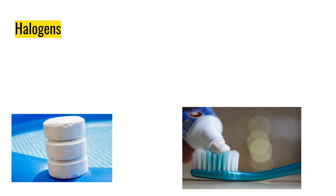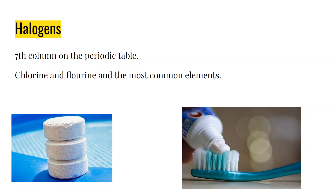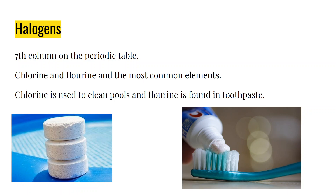Our next family is the halogens, and they are very interesting. Halogens are the seventh column on the periodic table, so you'd find them near the end. Chlorine and fluorine are the most common elements. Chlorine is used to clean pools, it's used in bleach, and it's used in mixtures to create certain plastics. PVC pipes actually have elemental chlorine mixed with other chemicals and elements to create that PVC we use.